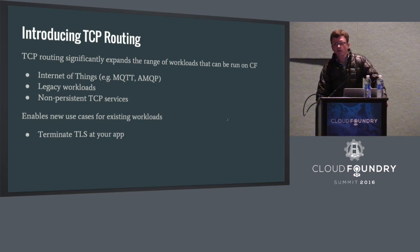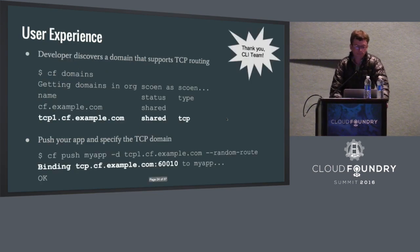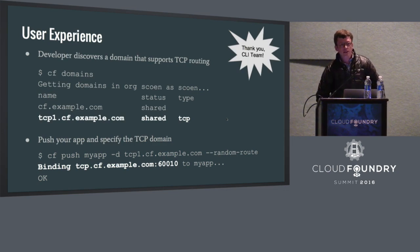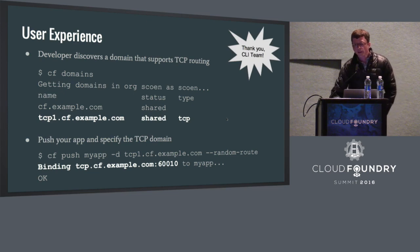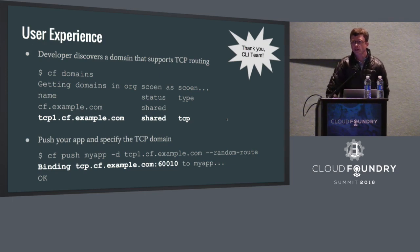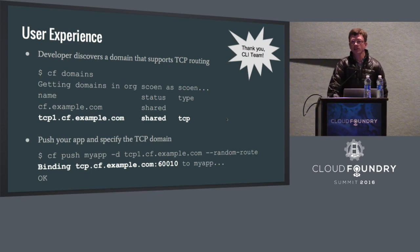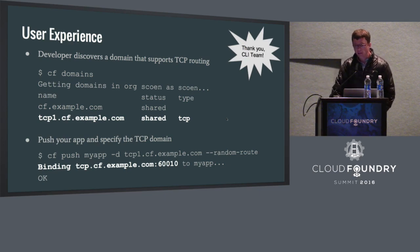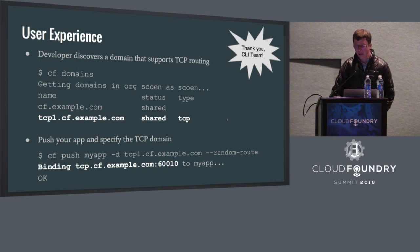With TCP routing, you can also terminate TLS at the application. Here's a look at the user experience: the first step is to discover a domain that supports TCP routing. In the response for CF domains, you see a domain that supports HTTP routing and one that supports TCP routing. After that, it's as simple as pushing your application and specifying that domain, using the random route option to have the platform generate and reserve a port.